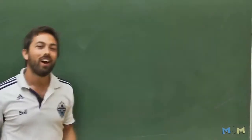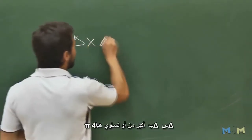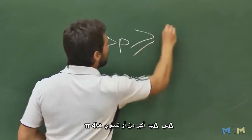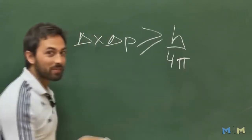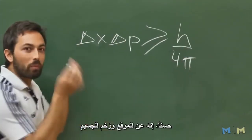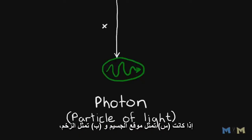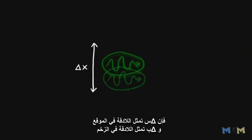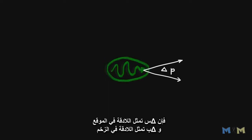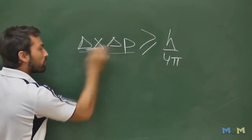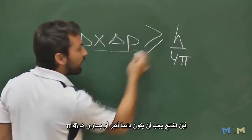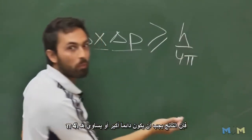To understand this, we have to look at Heisenberg's uncertainty principle. It is normally written as delta x times delta p is greater than or equal to h on 4 pi. So what does this mean? Well, it's about the position and the momentum of a particle. x is the position of the particle and p is its momentum. So delta x is the uncertainty in position and delta p is the uncertainty in the momentum. If you multiply those two quantities together, they must always be greater than or equal to h on 4 pi.